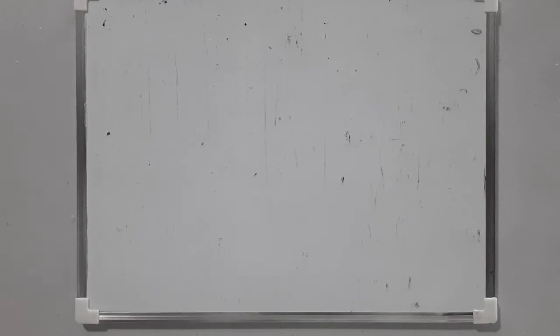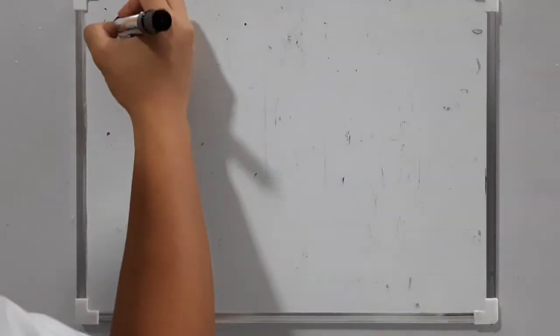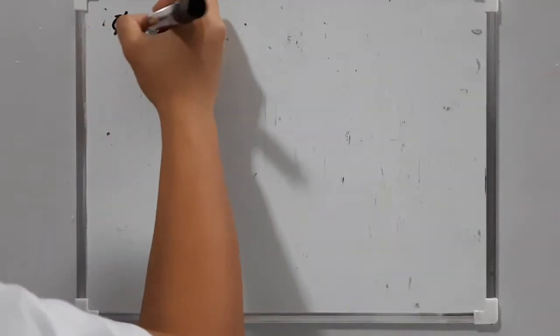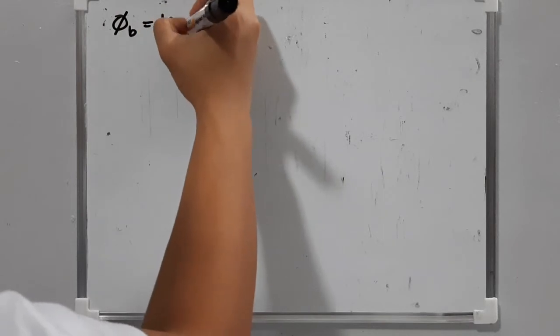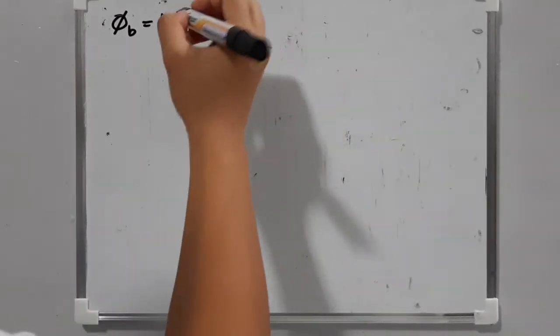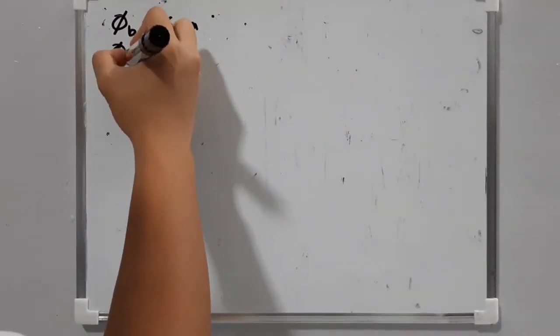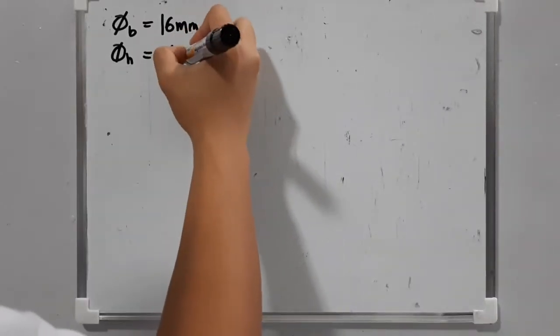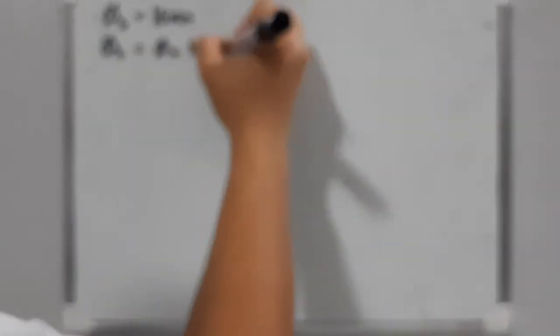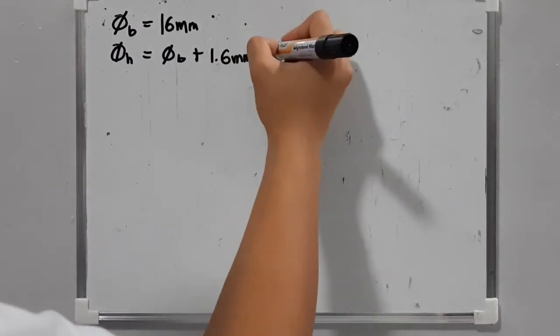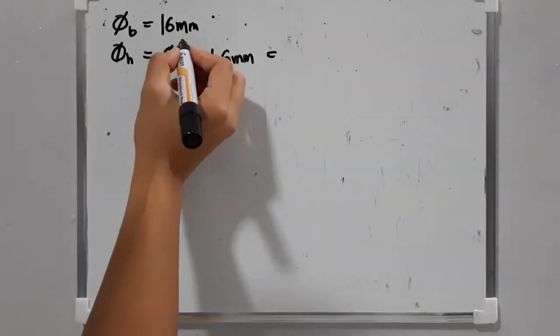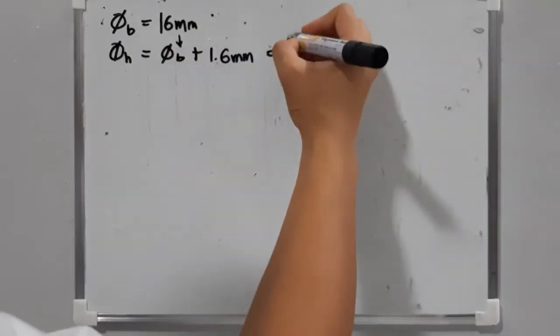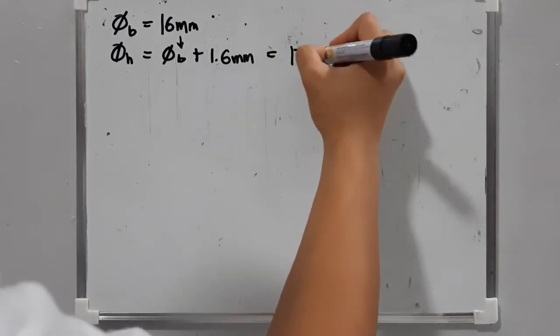Let's start with the given problem. Since we are given the diameter of the rivet which is 16 mm, we are required to find the diameter of the hole, which is equal to the diameter of the bolt plus 1.6 mm. That is 16 mm plus 1.6 mm, which equals 17.6 mm.